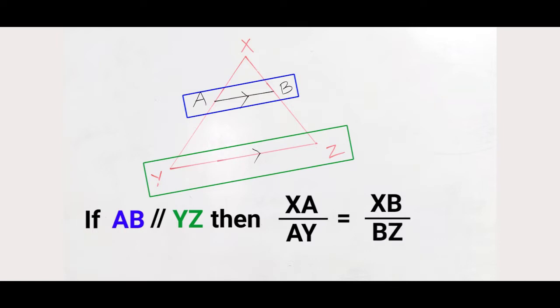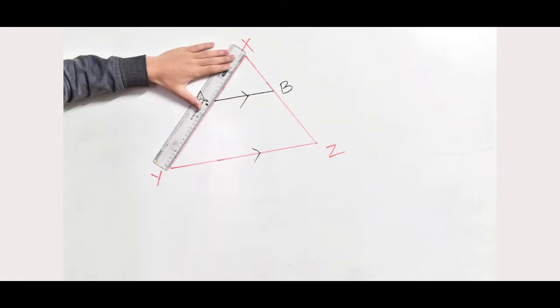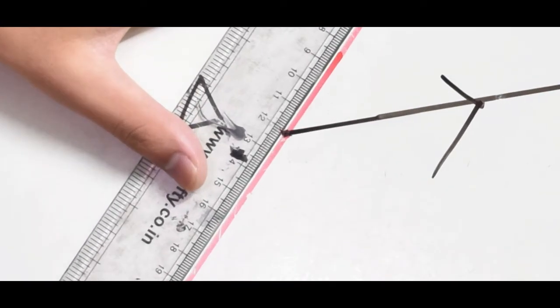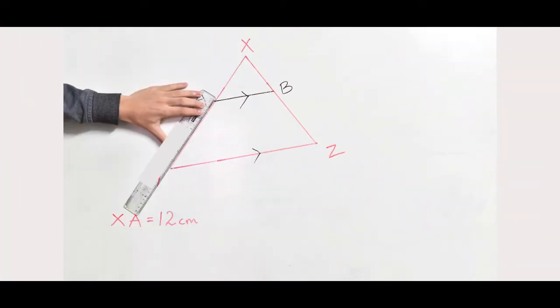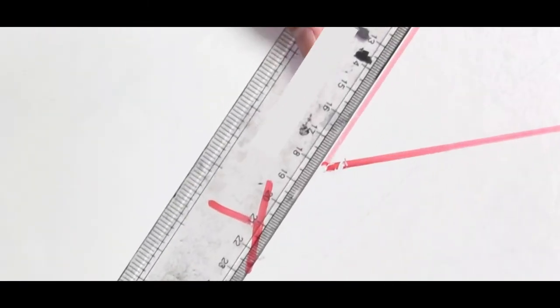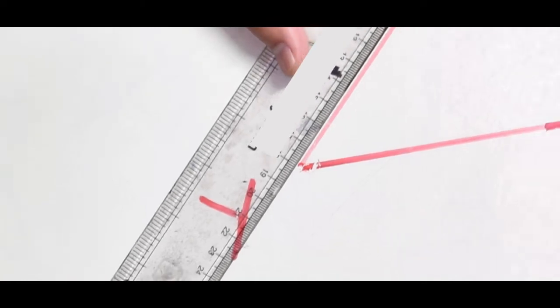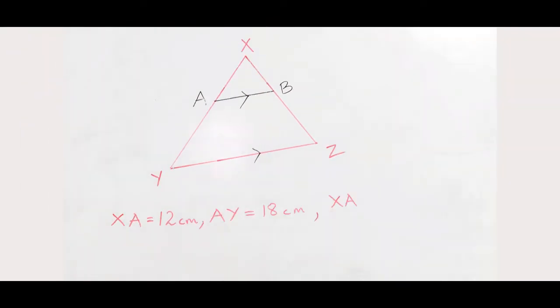So here we shall measure XA, AY, XB, BZ. XA is equal to how much? XA is equal to 12 cm, so we will write XA equal to 12 cm. AY is equal to how much? AY is equal to 18 cm, so we will write AY equal 18 cm, and the ratio XA by AY is equal to 12 by 18.